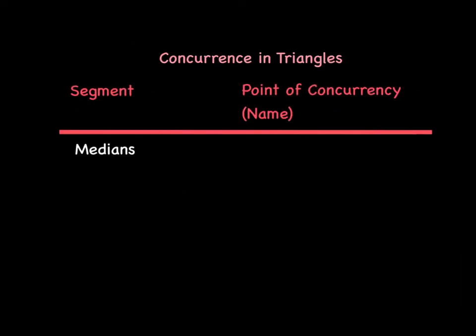There are four types of concurrent lines and segments in triangles that we're going to talk about. The first of which is when the three medians of a triangle are concurrent, which they are. The point of concurrency that they have is called the centroid.